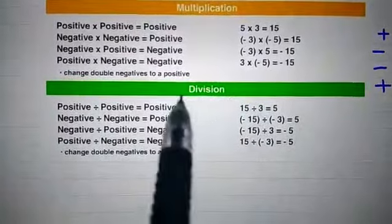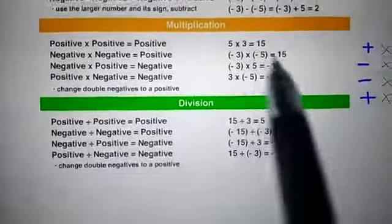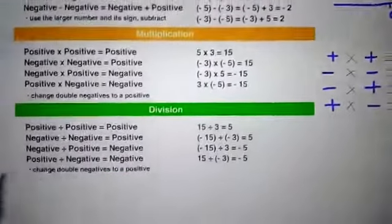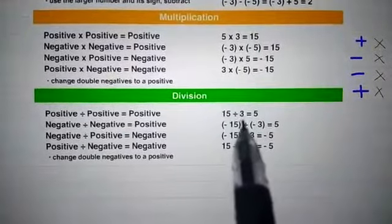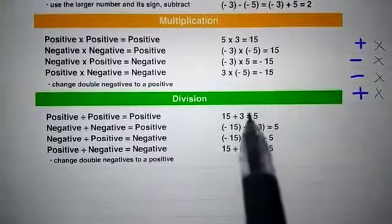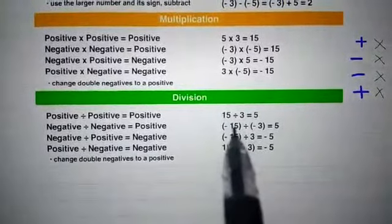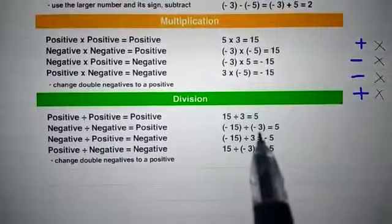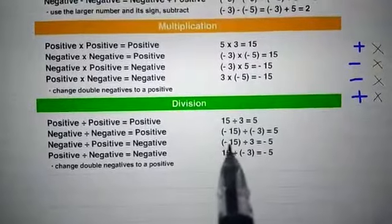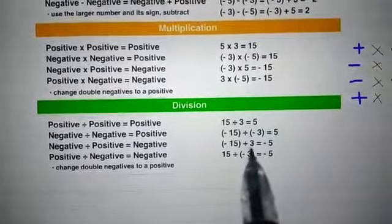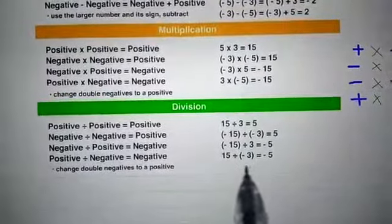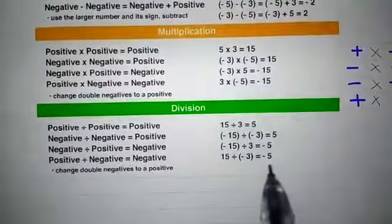We will now see division. In division, the same sign rules as multiplication are used. If we divide 15 by 3, the result is 5 — positive sign. Similarly, if we divide a negative by a negative, the result also has a positive sign. If the signs differ between the first and second numbers, the result will always be negative.